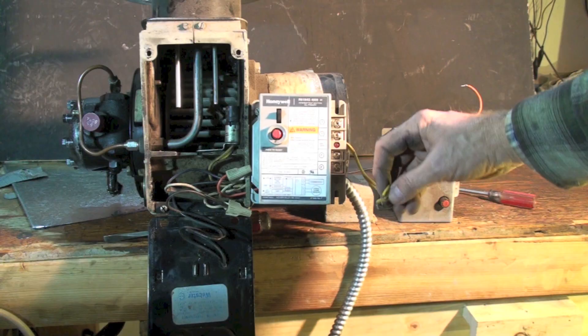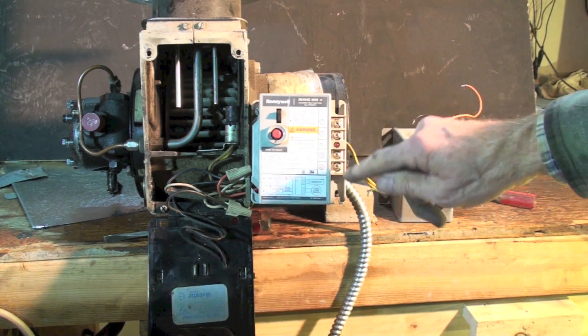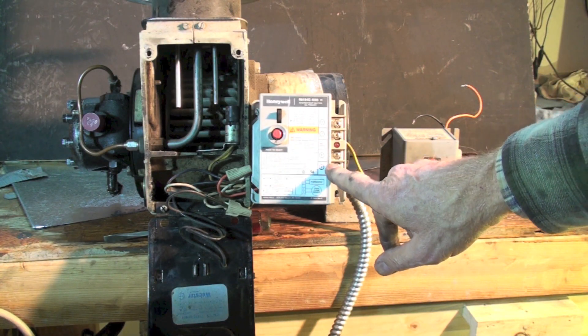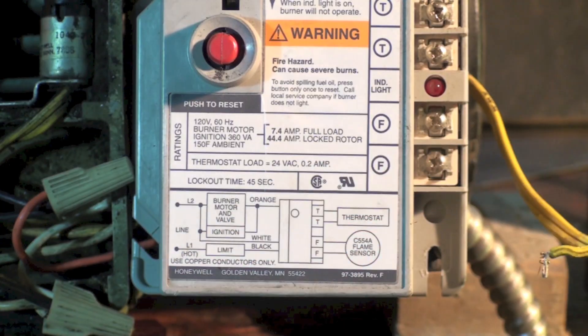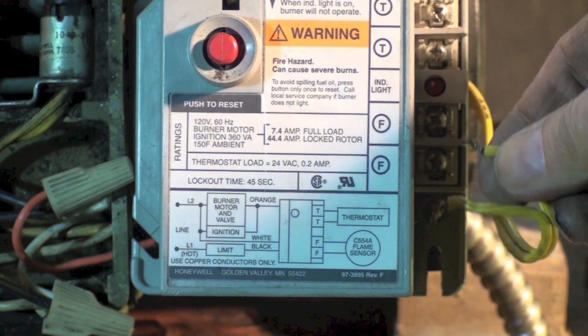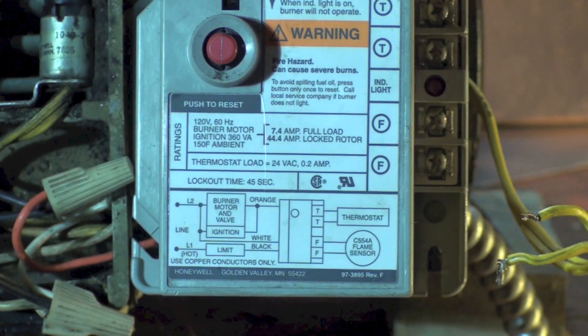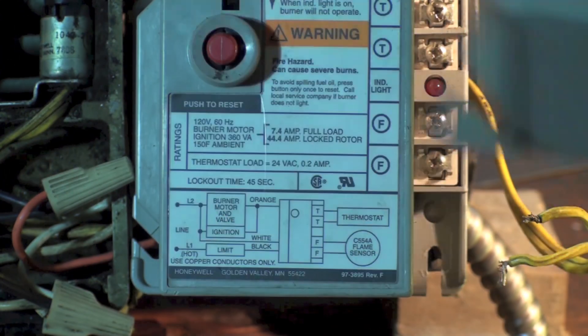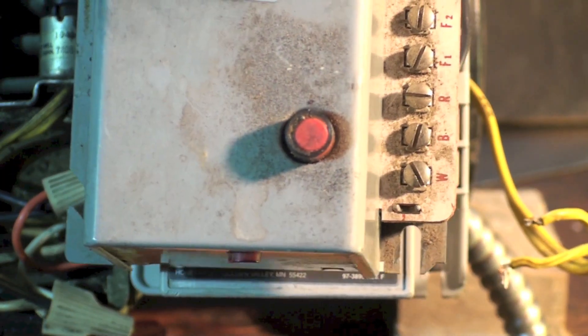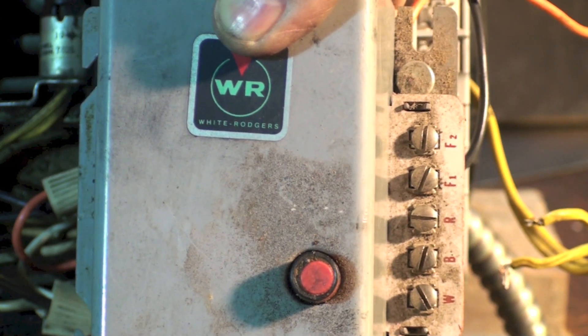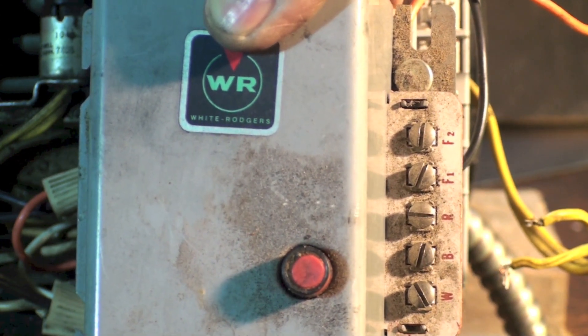The only other wiring you have to do is, on the Honeywell, it's the FF, and that's these yellow wires that are coming from the cad cell itself. And here again, on the White Rogers, it's F1 and F2, and it doesn't make any difference which wire goes where.